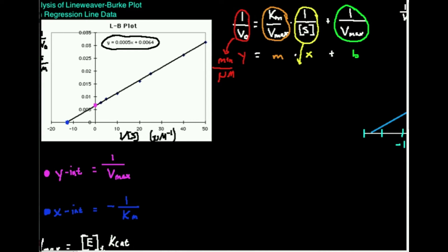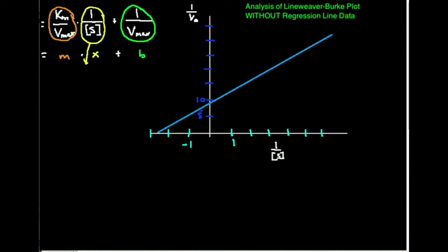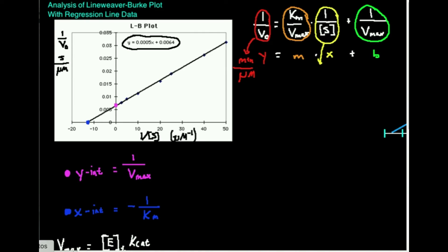The other way, which we're going to cover in a separate video, is analysis of the Lineweaver-Burk plot without that y equals mx plus b. In this case, you have to extrapolate the data and basically eyeball it. You would never do this in a research or lab setting. This is something you would more or less do on a test if you were forced to. You would never do this in real life, but it's the same concept except you wouldn't use a y equals mx plus b, and there's a different way to go about doing that.